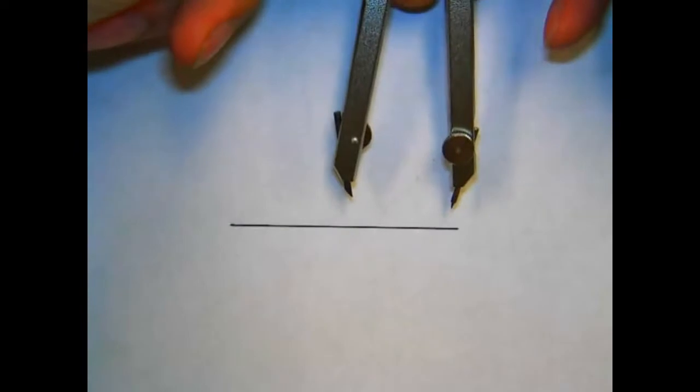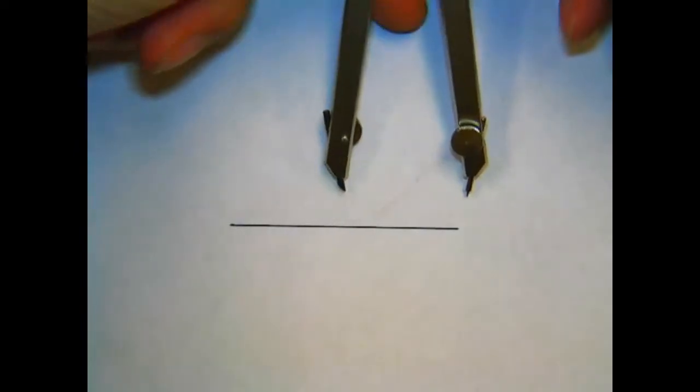To bisect a line, first we need to set our compass to about two-thirds the length of the line.